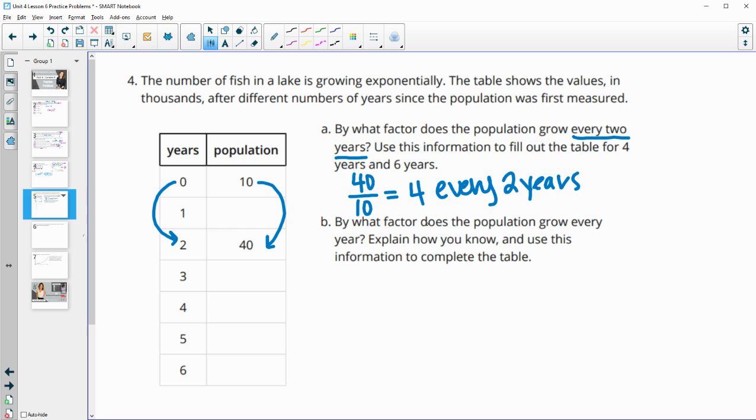So now it's asking us to fill in the table. So now in two more years, we could multiply this by four and get 160. And then in two more years, we could multiply this by four and get 640.